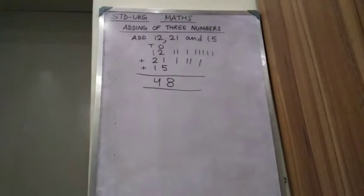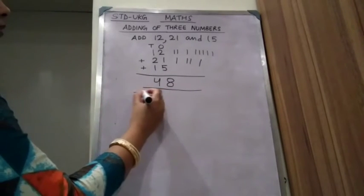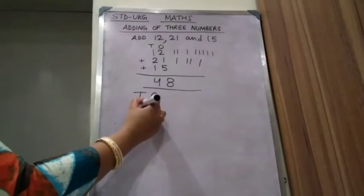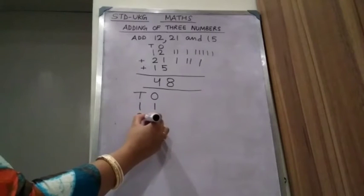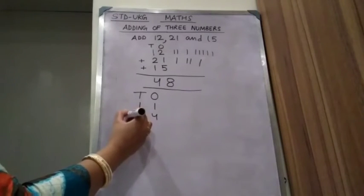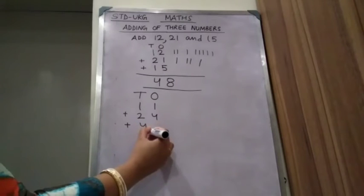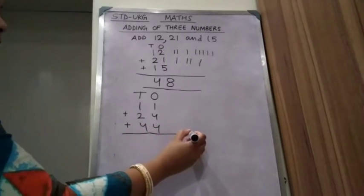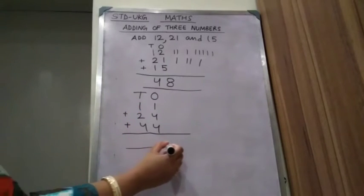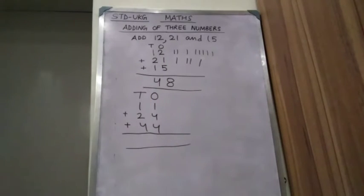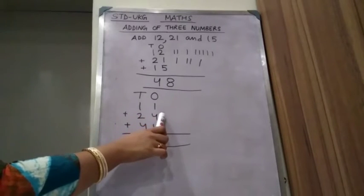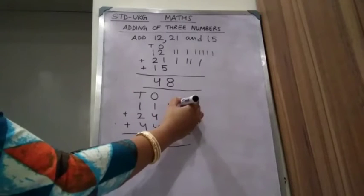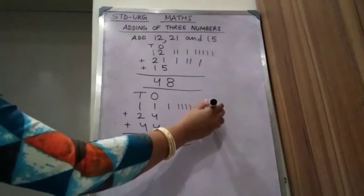Now see the next one. Suppose we have to add 11 plus 24 plus 44. How are you going to add this? First we will add the ones column. What are the numbers in the ones column? 1 plus 4 plus 4.